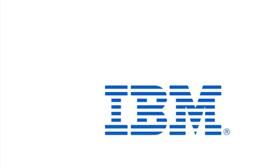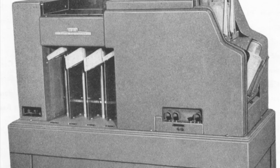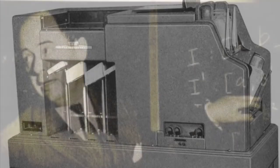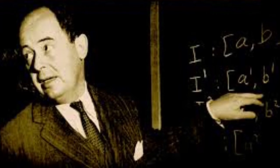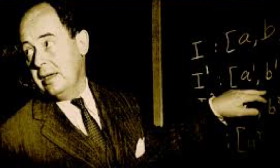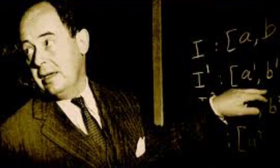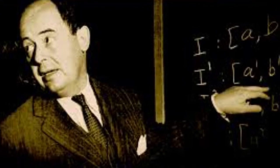In 1936, IBM began producing a line of machines called Collators that could merge two separately ordered stacks of cards into one. John Von Neumann wrote a program in 1945 to demonstrate the power of the stored program computer, and he took this idea of collating to its beautiful and ultimate conclusion.